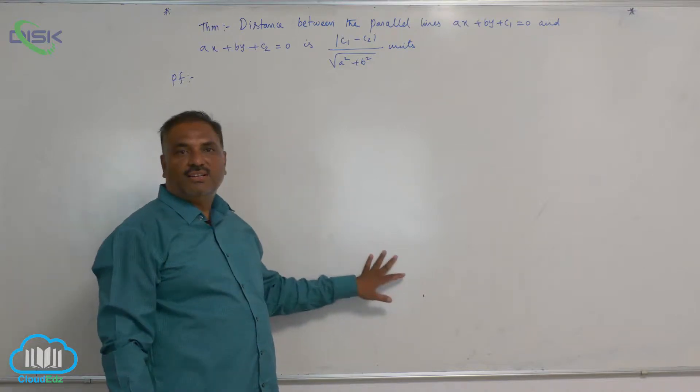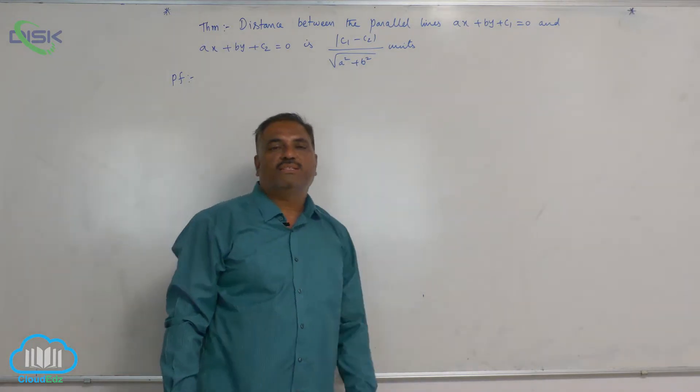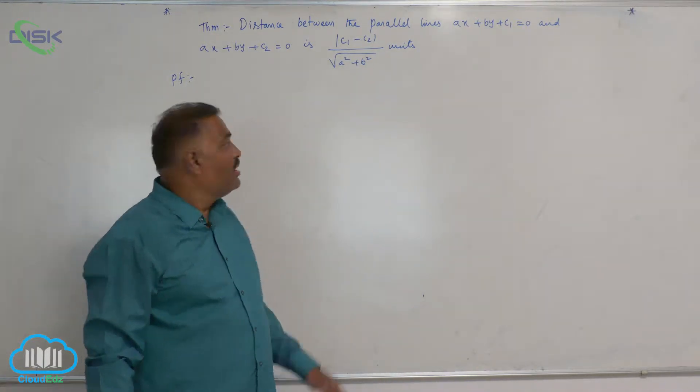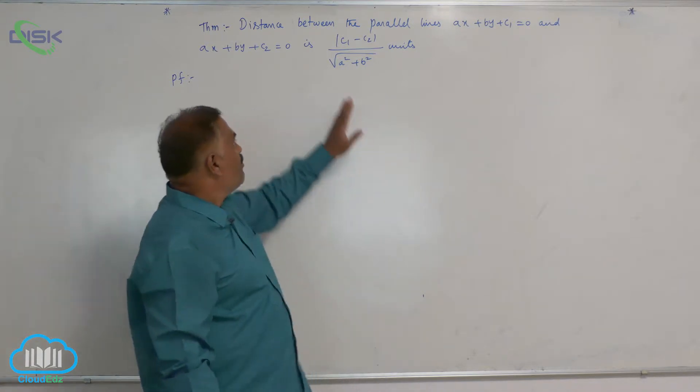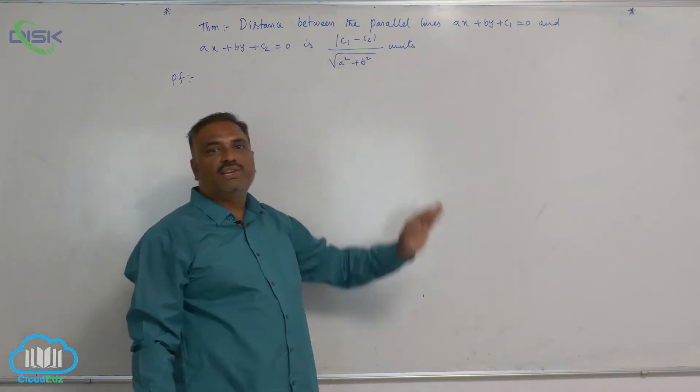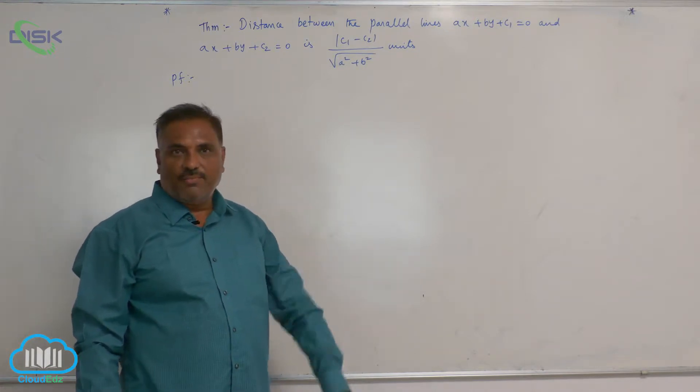We will discuss one more important result. Distance between the parallel lines AX plus BY plus C1 equal to 0 and AX plus BY plus C2 equal to 0 is modulus C1 minus C2 by square root of A square plus B square.